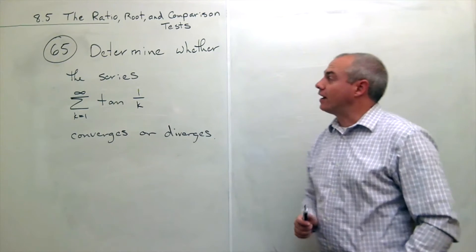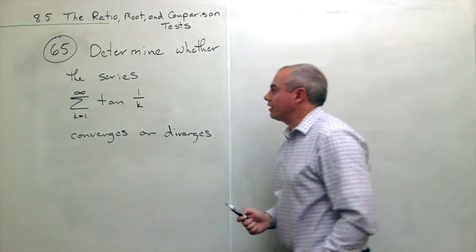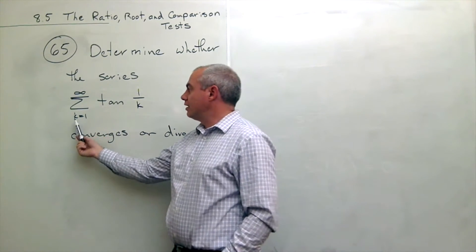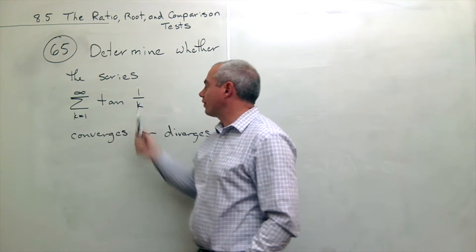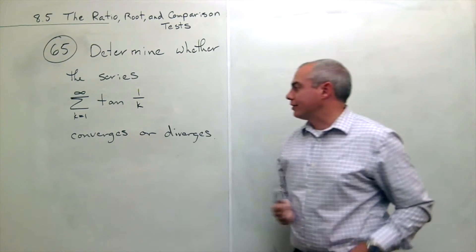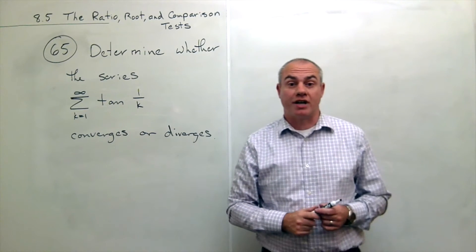In problem number 65, I'd like to determine whether the series sum k going from 1 to infinity of tangent of 1 over k, whether that converges or diverges.